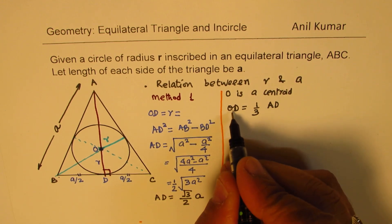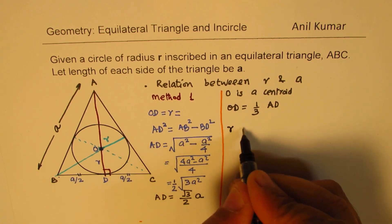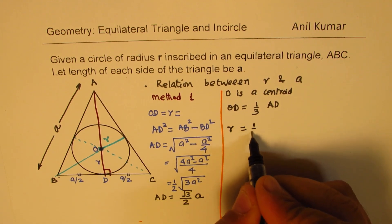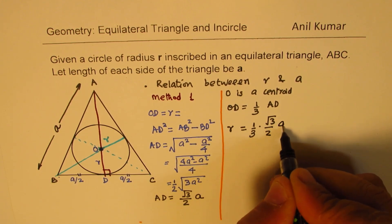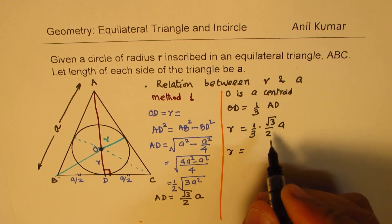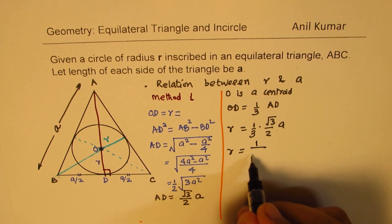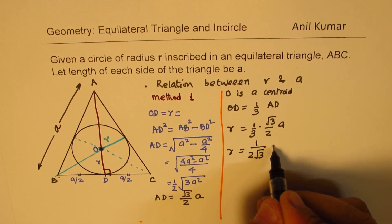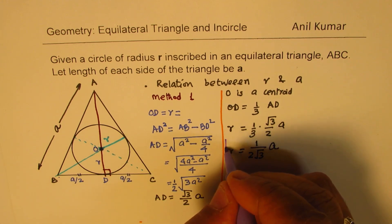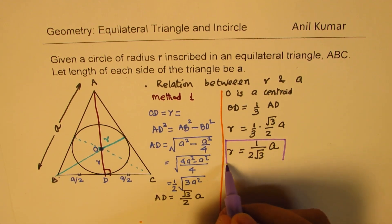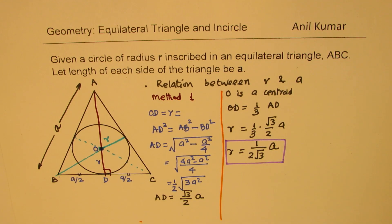AD, substitute this value. OD is what we're looking for as the radius of inscribed circle. One third of AD means square root 3 over 2 times a. Now, that means r is equal to, you could write as such also, or we'll just simplify this and write this as 1 over 2 square root 3 times a. So that becomes the radius. So you could use this particular formula as the relation between r and a. So that is our method number one.